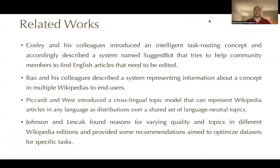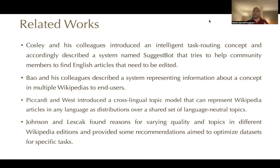There are some related works in this field. Kozli and his colleagues introduced an intelligent task routing concept and described a system named SuggestBot that helps community members find English articles that need to be edited. Poe and his colleagues described a system representing information about a concept in multiple Wikipedias to end-users. Picardy and West introduced a cross-lingual topic model that can represent Wikipedia articles in any language as distributions over a shared set of language-neutral topics. Johnson and Lescak found reasons for varying quality and topics in different Wikipedia editions and provided recommendations to optimize datasets for specific tasks.